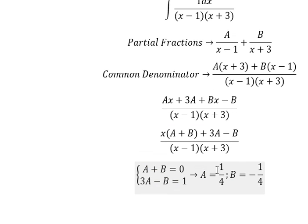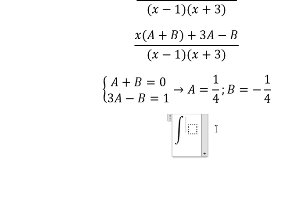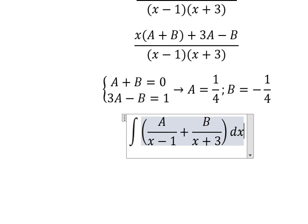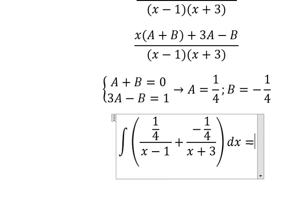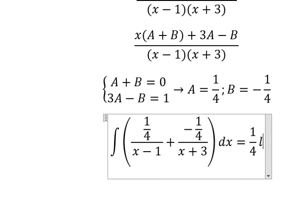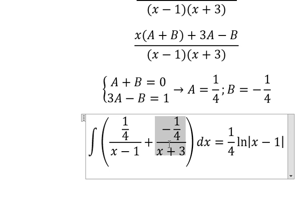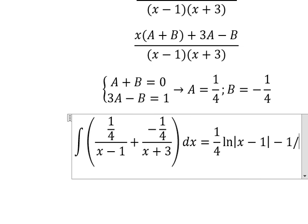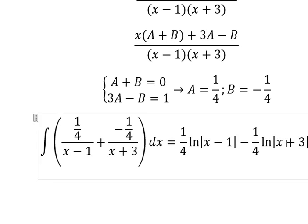And now we need to put these values in here. The integration of this one, we have 1 over 4 ln of the absolute value of x minus 1. The integration of this one, we have negative 1 over 4 ln of the absolute value of x plus 3. And we put c in here.